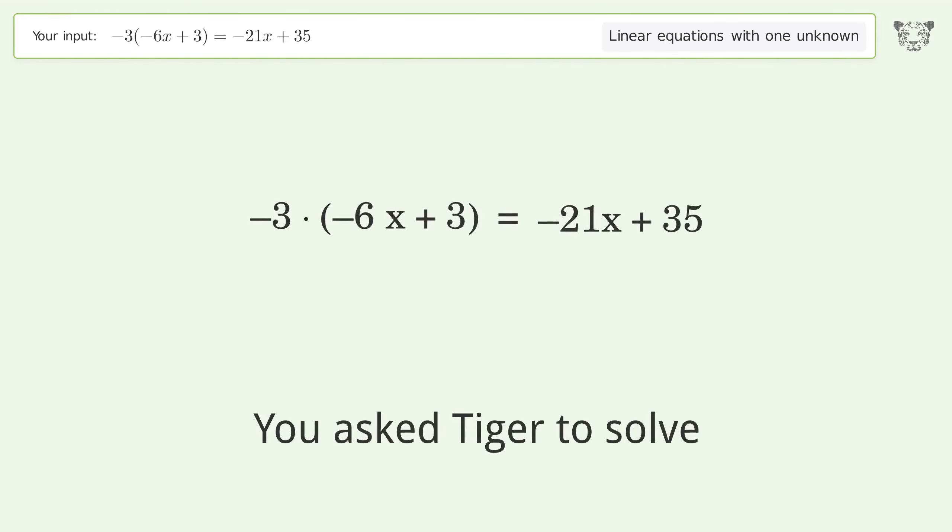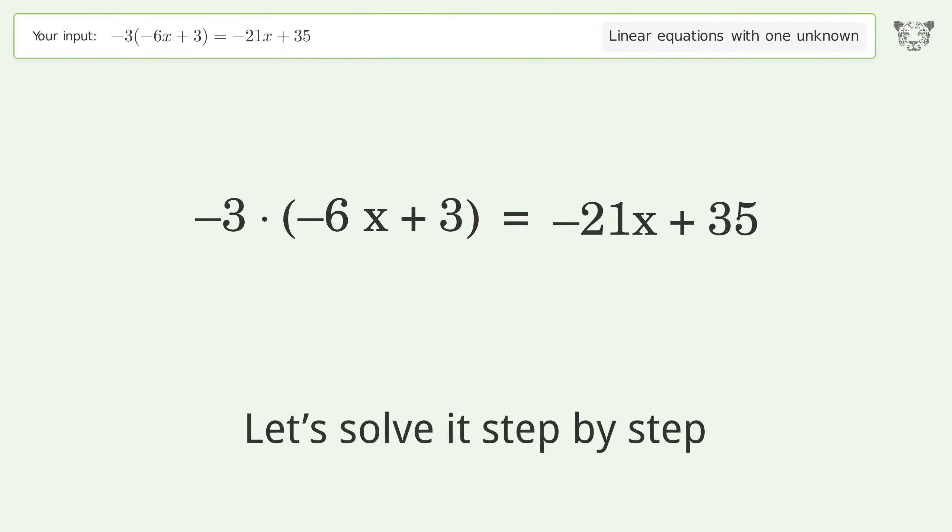You asked Tiger to solve this. This deals with linear equations with one unknown. The final result is x equals 44 over 39. Let's solve it step by step. Simplify the expression, expand the parentheses.